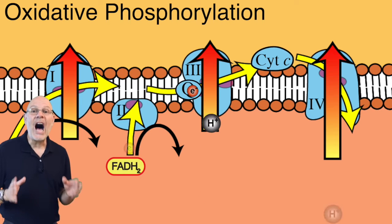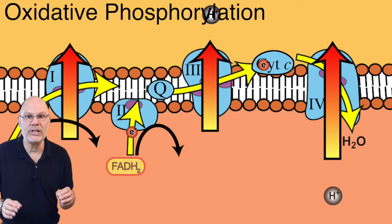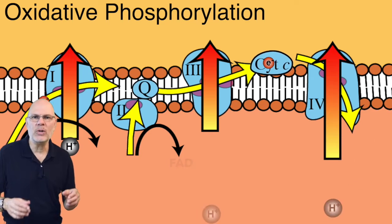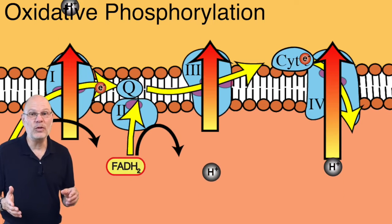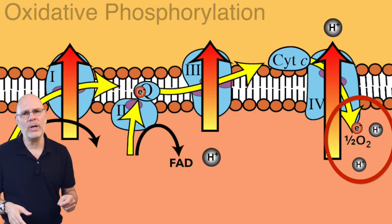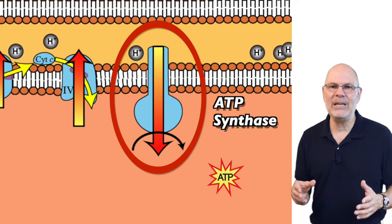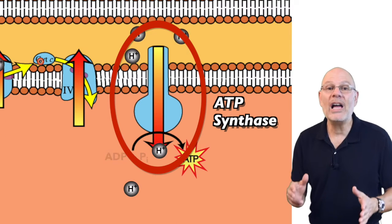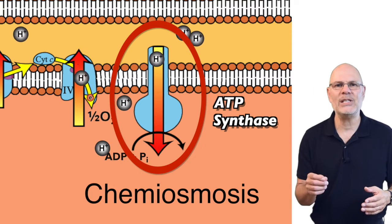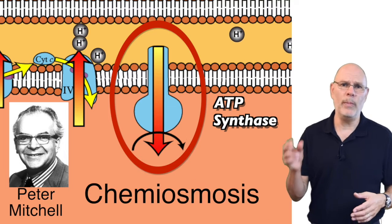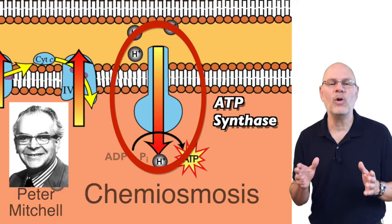This process is called oxidative phosphorylation because the electron transport chain can only run if oxygen is present — oxygen is the last electron acceptor in the chain. If oxygen isn't present, electrons don't flow. If electrons don't flow, protons don't get pumped. If protons don't get pumped, ATP synthase can't make ATP from ADP and phosphate. This process is also called chemiosmosis — because the diffusion of protons through the ATP synthase channel reminded Peter Mitchell, the Nobel laureate who discovered this process in the 1960s, of osmosis, the diffusion of water.